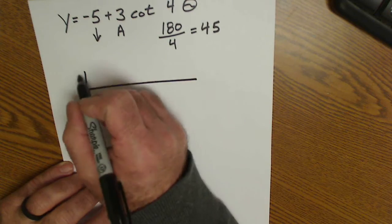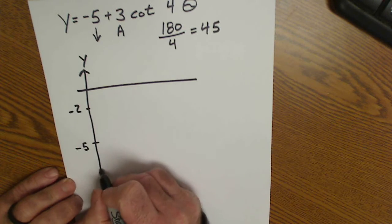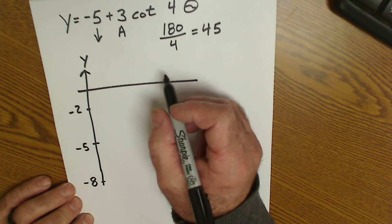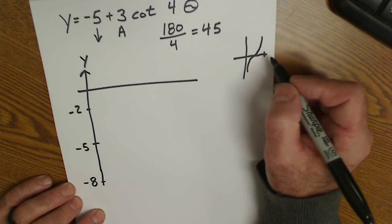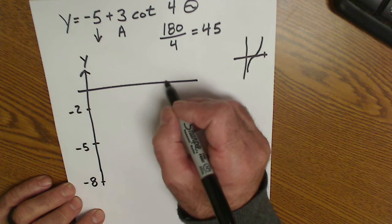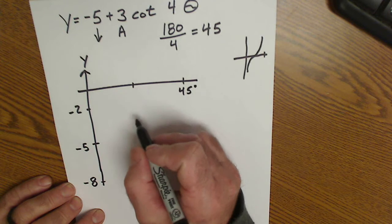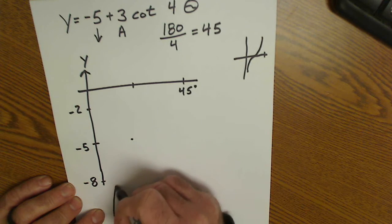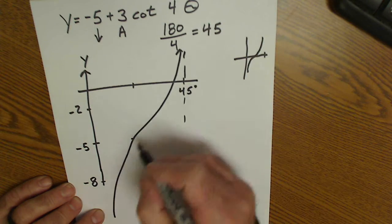Step 2: label your y-axis from negative 5. I go up 3 and down 3. Step 3: label my x-axis. Cotan usually cycles between 0 and 180, but now it's going to cycle between 0 and 45. So I'm going to start at 0. It's going to have an asymptote at 45 degrees. Half of that is 22 and a half — that's my center point. And then it's going to go like that with an asymptote at 45 and an asymptote at 0.